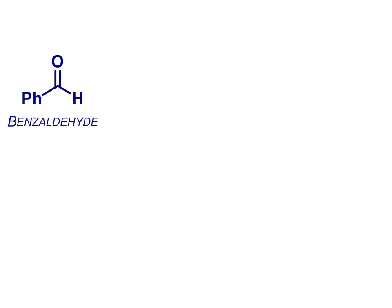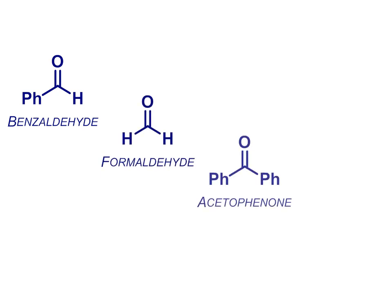In the context of enols and enolates, the requirement for alpha hydrogens means that there are some carbonyl compounds which can never form enols or enolates. Take a look at benzaldehyde here, or formaldehyde, acetophenone, and pivalaldehyde. In all these cases, there are nice healthy carbonyl groups, but no alpha hydrogens that might be removed, so we can't form an enol or enolate under any circumstances.